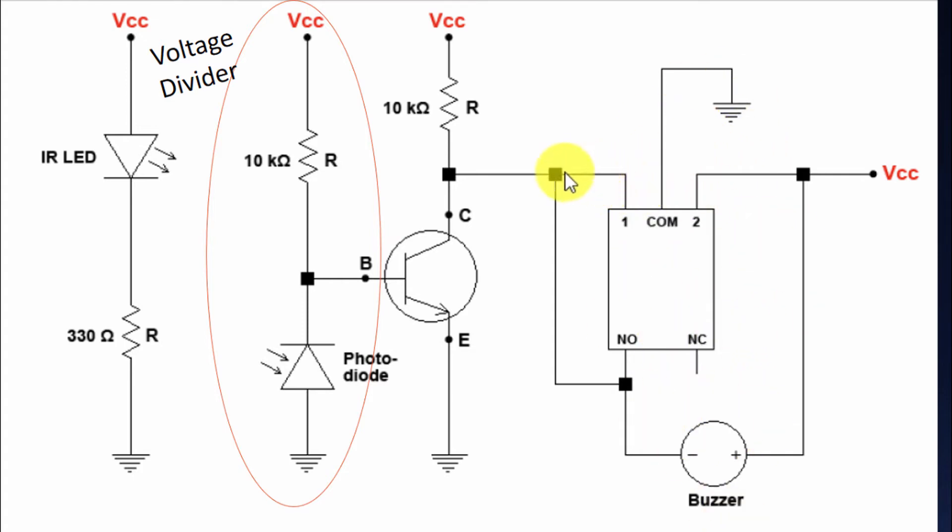The purpose of shorting this one with the NO is that once the intrusion is detected, the buzzer will keep on ringing and the relay will not switch back into its initial state even if the intrusion is removed.